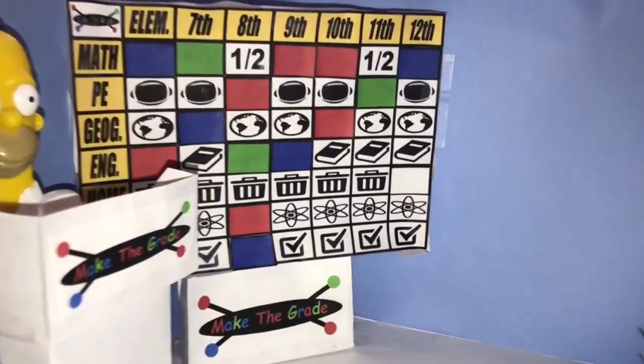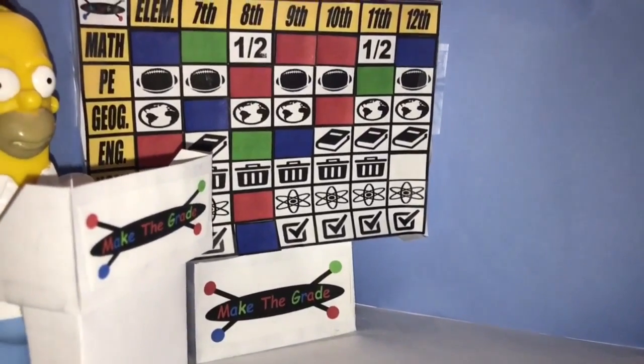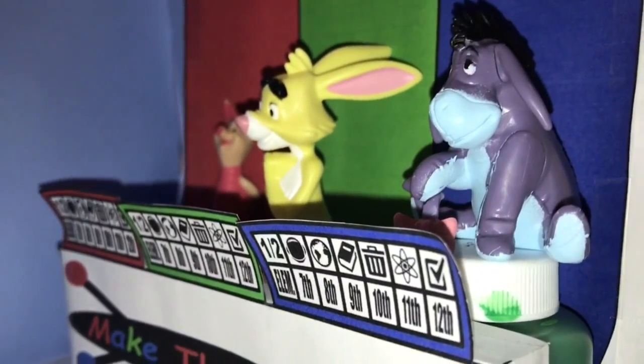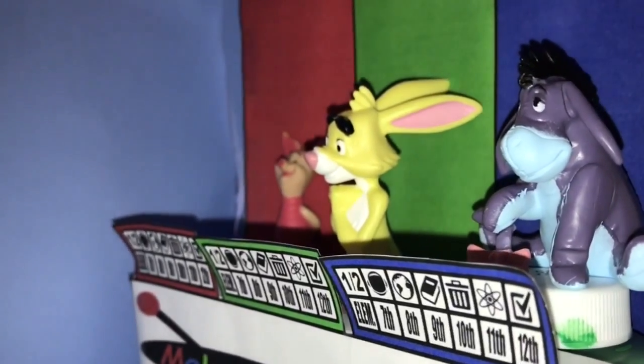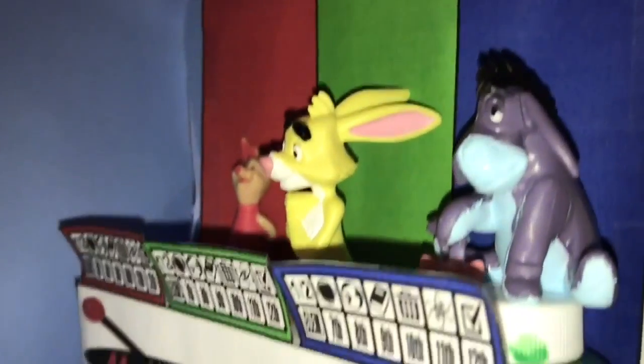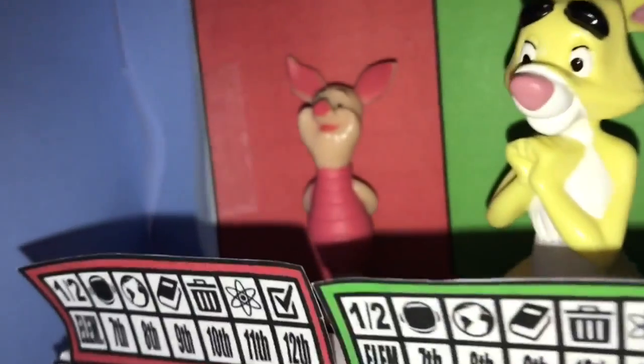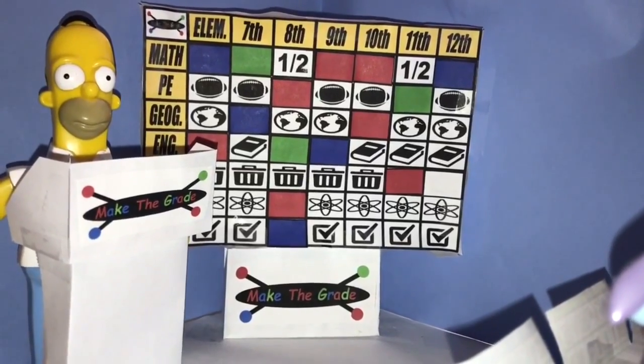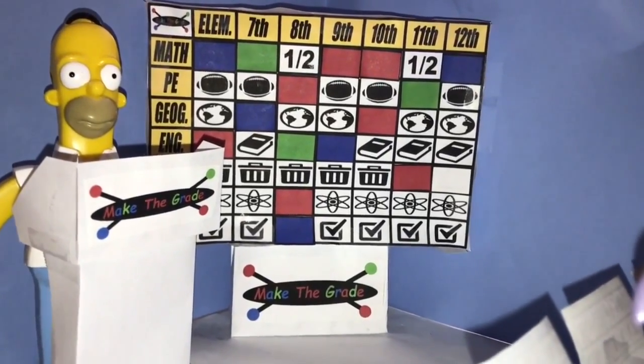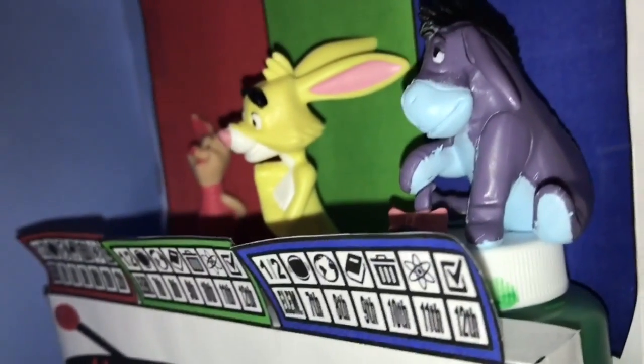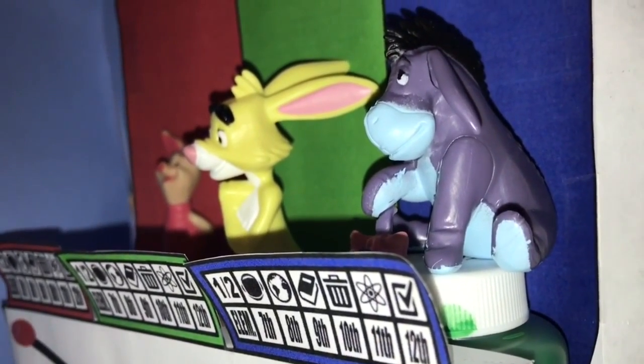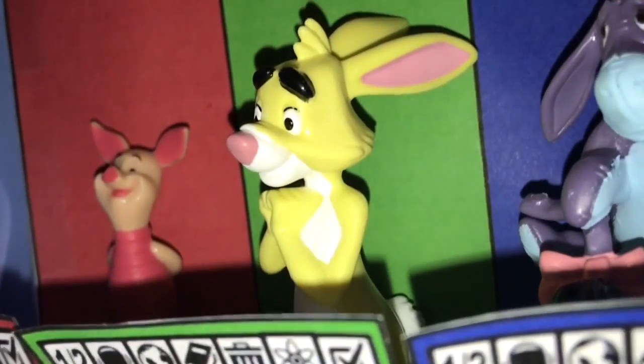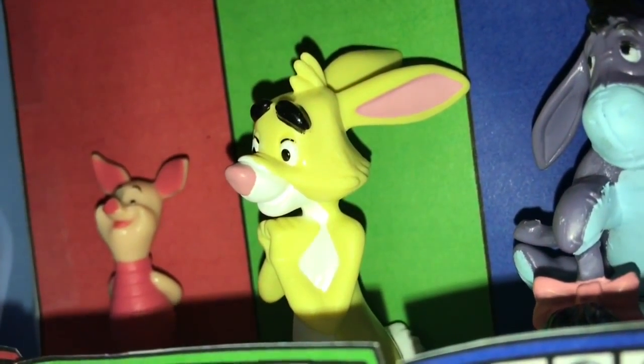Home Ec for 11th Grade. Snickers, Kit Kat, and Twix are all brands of what? Piglet. Chocolate bars. Correct. Science for 7th Grade. Paper, plastic, and metal are things that you use to what? Rabbit. Recycle. Yeah. You remember that.